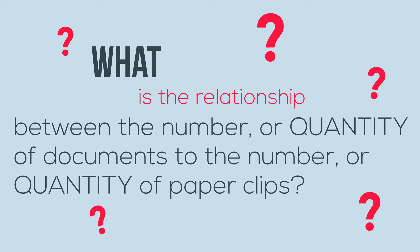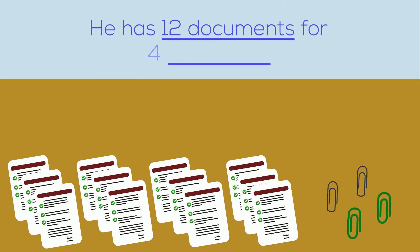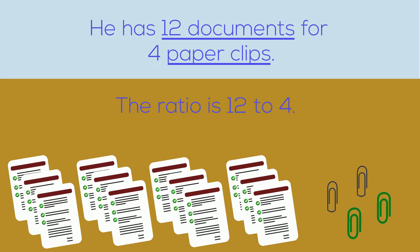Ratios compare quantities. If he has 12 documents and 4 paperclips, we say the ratio is 12 to 4. You can also write it 12 to 4. The order of the numbers matches the order of the statement.